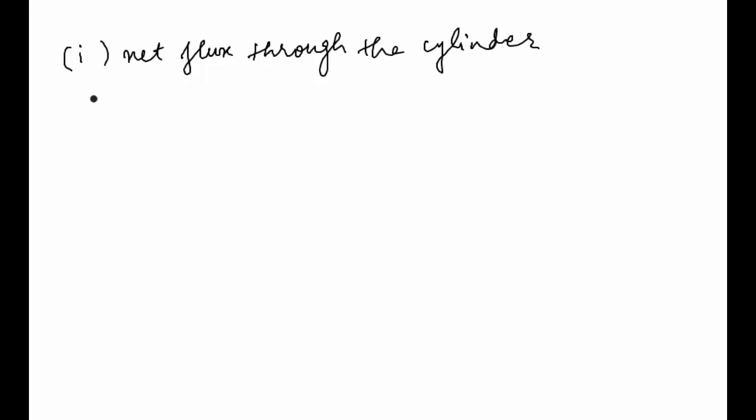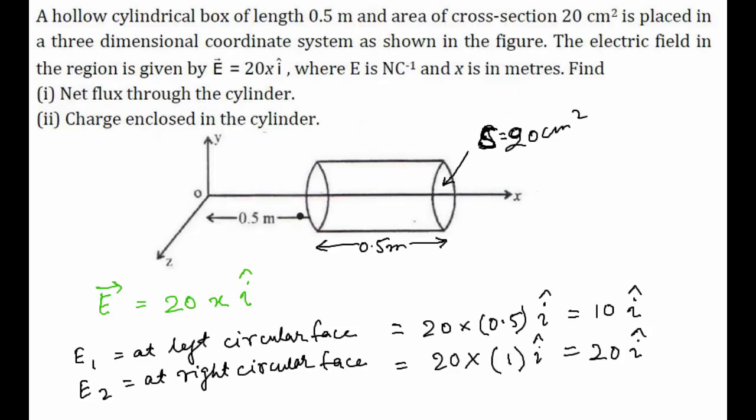The expression is ∫E⃗·dS⃗ = ∫E₁·dS + ∫E₂·dS + ∫E·dS for the curved surface. The first expression is for the left surface, the second expression is for the right surface, and the third is for the curved section.